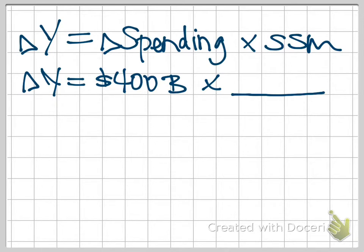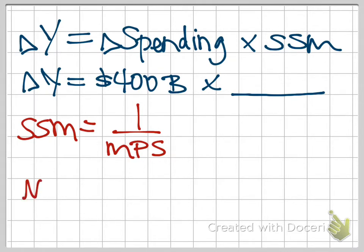What we don't yet know is our simple spending multiplier. So how do we get to the simple spending multiplier? The SSM is 1 over the MPS. Did I give you the MPS? No, I didn't, but I gave you the information to calculate it because the MPS is the change in savings over the change in disposable income.